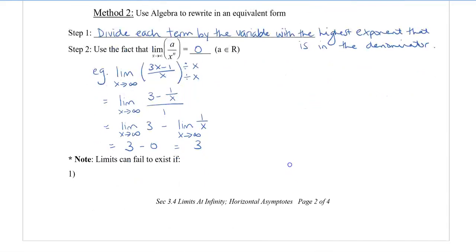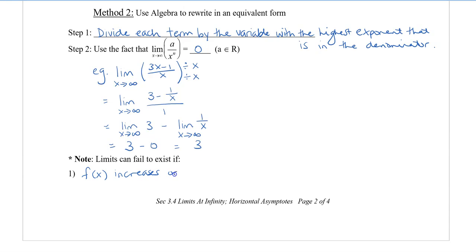Note that limits can fail to exist if f of x increases or decreases without bound as x approaches infinity or x approaches negative infinity. Without bound means that it's going to keep going forever. An example of this would be y equals x cubed. There's no upper number that x is approaching, and there's no lower number that x is approaching. Therefore, the y value keeps increasing as well.